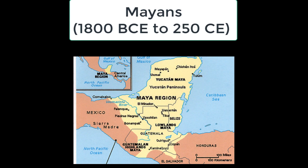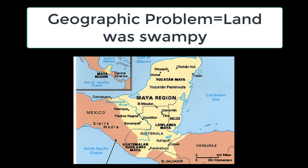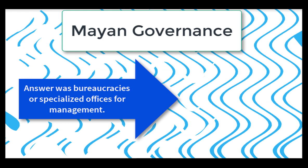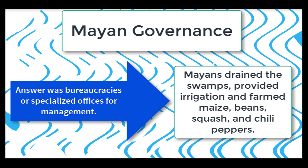One of our first examples is the Mayans. The Mayans were in northern Guatemala and formed a group of city-states and kingdoms that mostly traded with one another. Every once in a while a group tried to conquer and unite, but this was never really very successful. The big geographical problem was that the land was swampy. The people developed bureaucracies — offices where people had specialized jobs — and they would drain swamps and create irrigation systems. They farmed crops like maize, beans, squash, and chili peppers.